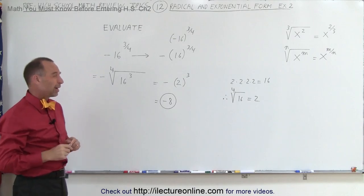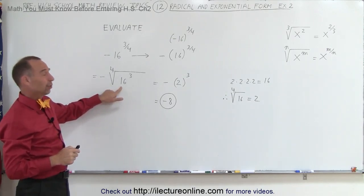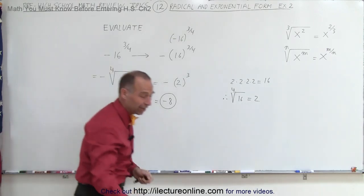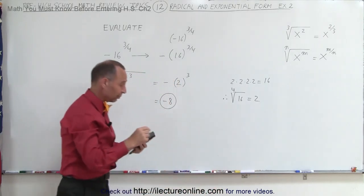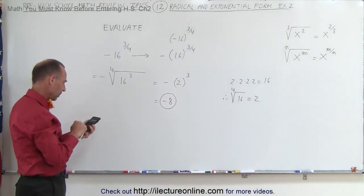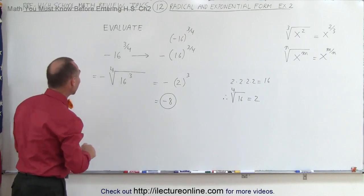Well, we could have done it the other way, but you know what? 16 to the third power is a pretty big number. Let's take our calculator and see what that number is equal to. So 16 raised to the third power equals 4096.